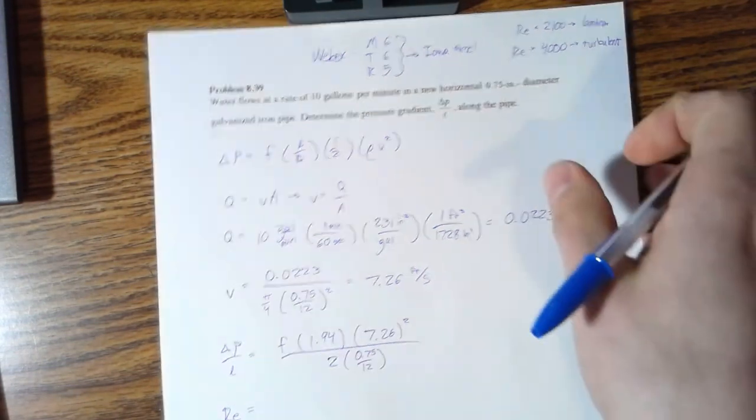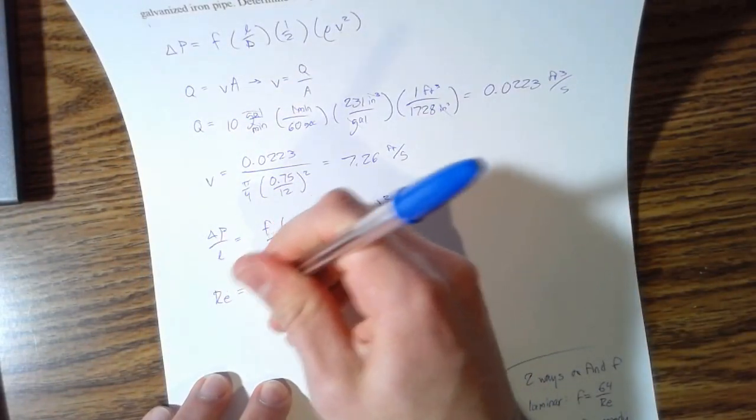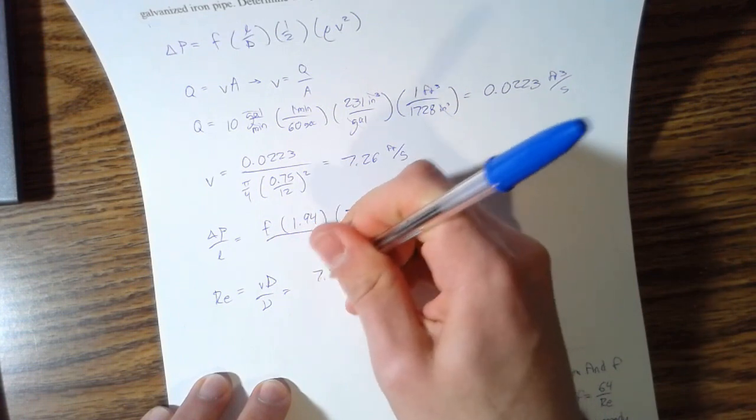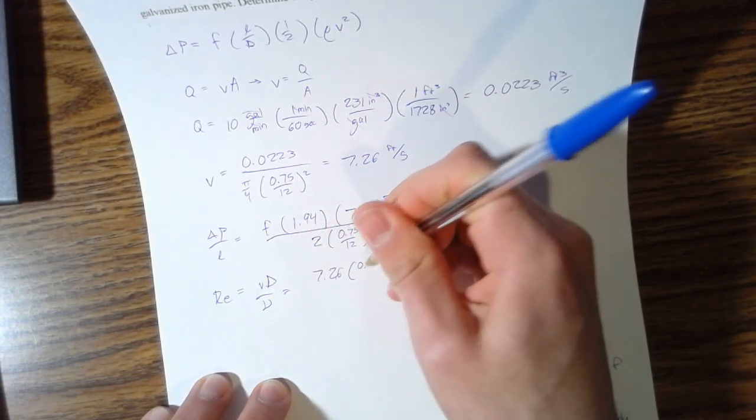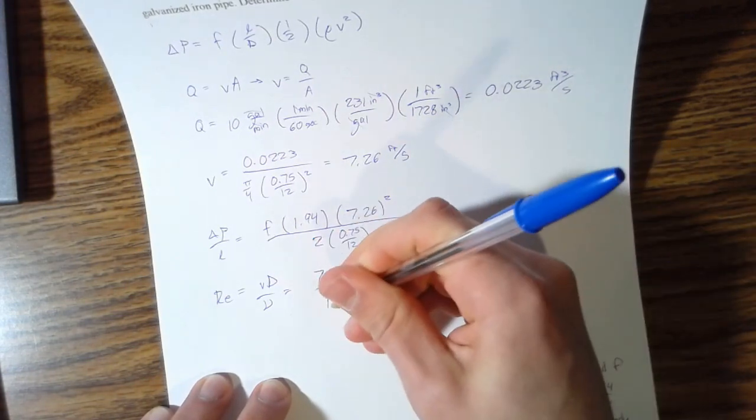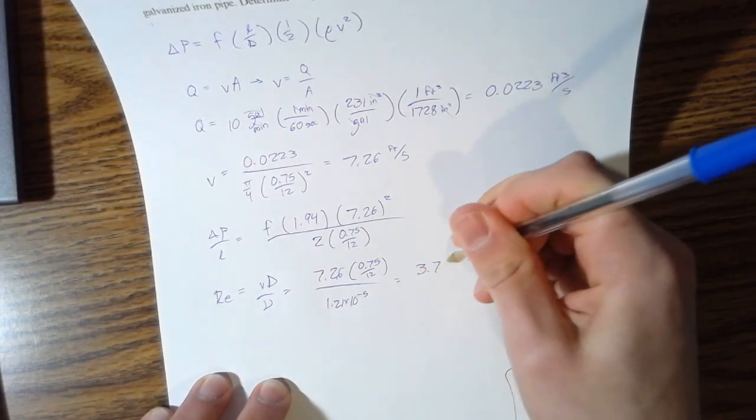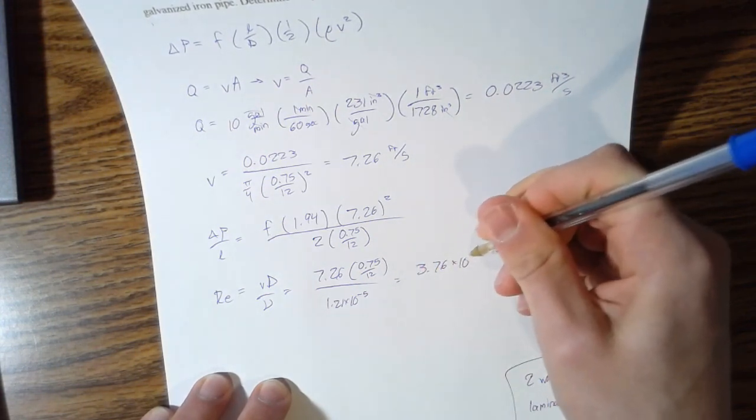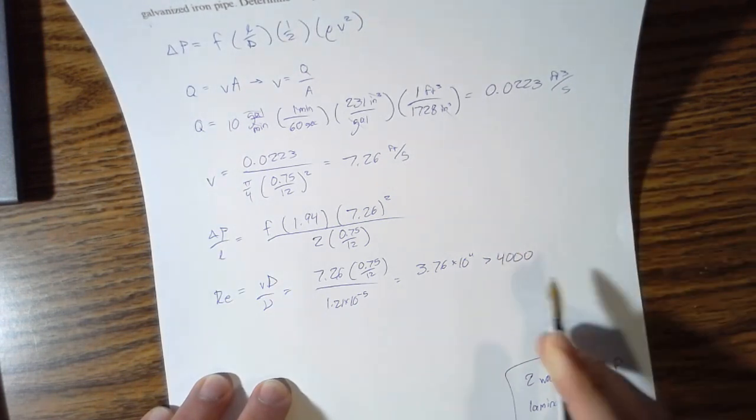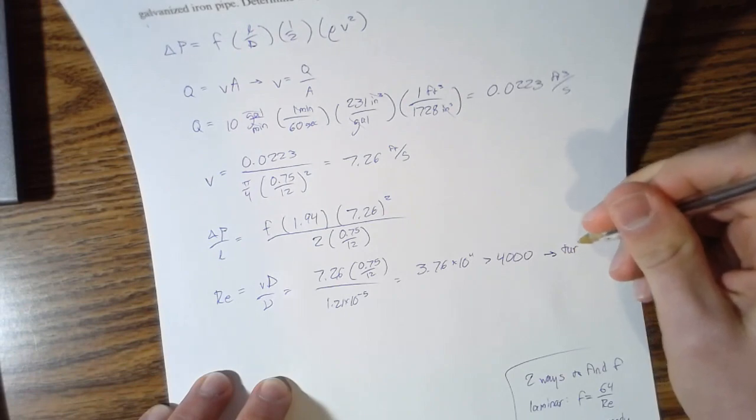And to do that, your Reynolds number—one form of it is just V times D over nu. Your V is 7.26, D is 0.75 over 12, and your nu is 1.21 times 10 to the negative fifth. And that's 3.76 times 10 to the fourth, which is greater than 4000, so we have turbulent flow.